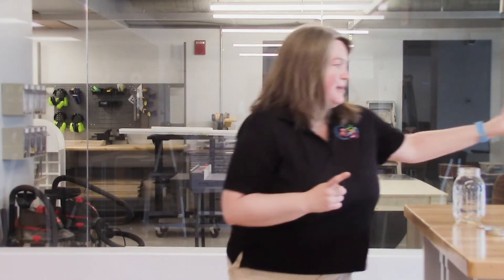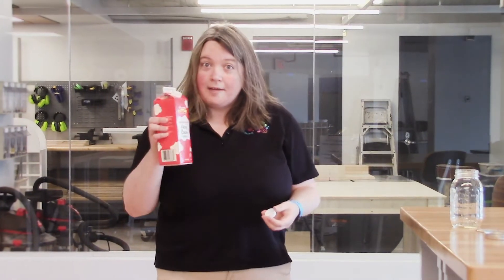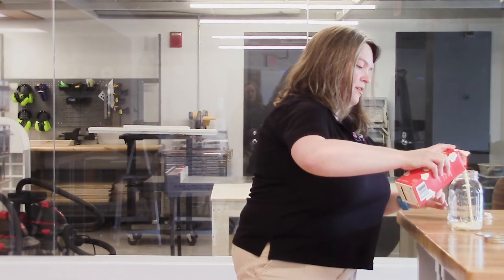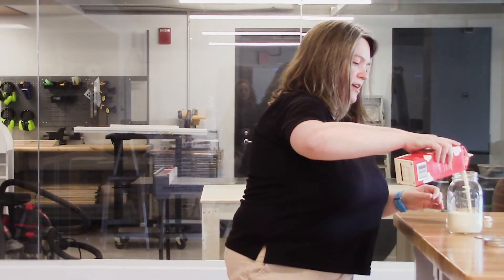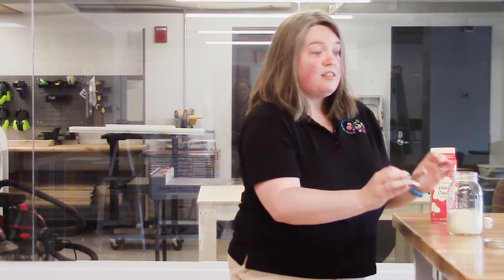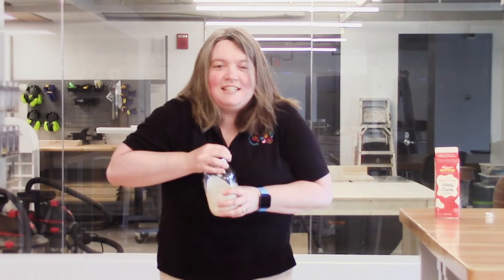To make our butter, what you're going to need is room-temperature heavy whipping cream, which I have right here. And then you're going to need a jar with a really tight lid, like a mason jar. I'm going to fill it about halfway with cream, and then put on the lid — make sure it's on really, really tight.